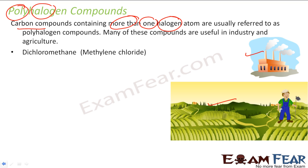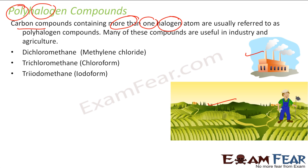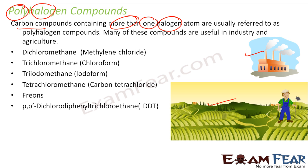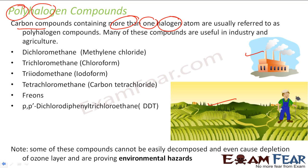The examples of polyhalogen compounds are: dichloromethane, trichloromethane or chloroform, triiodomethane or iodoform, tetrachloromethane or carbon tetrachloride, freons, and DDT. These are common polyhalogen compounds that we use in industry. We will learn a little bit about each of these compounds.